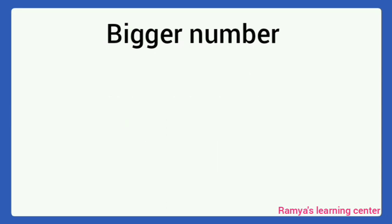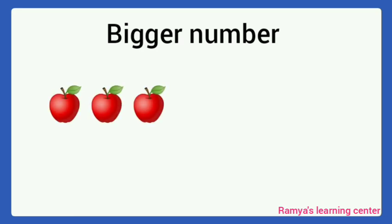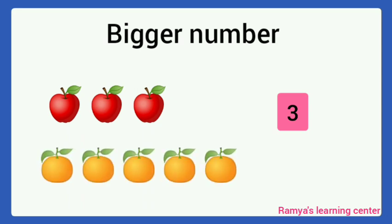First, bigger number. How many apples are here? 1, 2, 3. How many oranges are here? 1, 2, 3, 4, 5. Which is more? Oranges are more. So, number 5 is the bigger number.